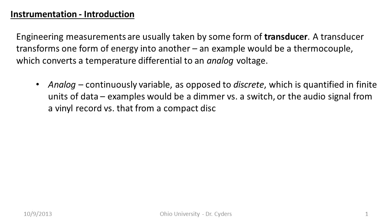When I say analog, analog means continuously variable, as opposed to discrete. If you know what a continuously variable transmission is, it's the difference between a conventional transmission and a continuously variable one. Another example would be a dimmer versus a switch: with a dimmer you can adjust the brightness of a light infinitely, whereas a switch only gives you a couple of discrete settings — say, a three-way switch: off, dim, and bright. That's a discrete system, which is what digital systems typically look like, whereas a continuously variable system has analog behavior.